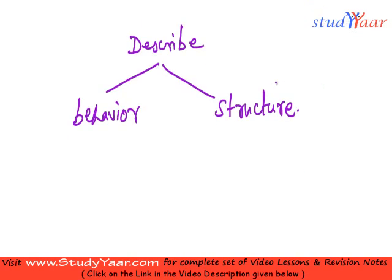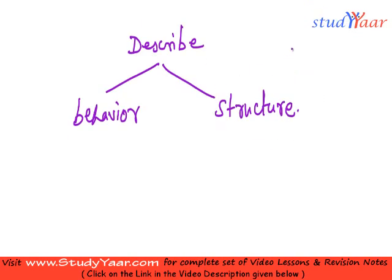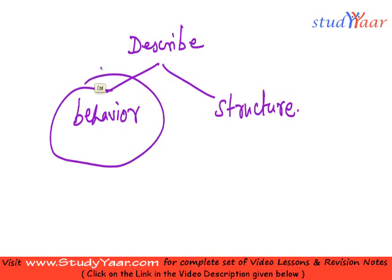In terms of structure, you can say that this circuit is made up of these types of gates which are connected in this fashion. In behavior, what you describe is: when you give these inputs, you get these outputs.